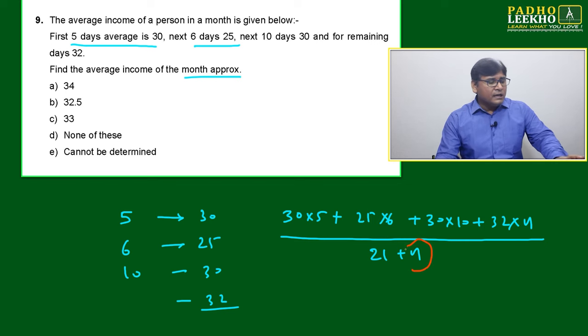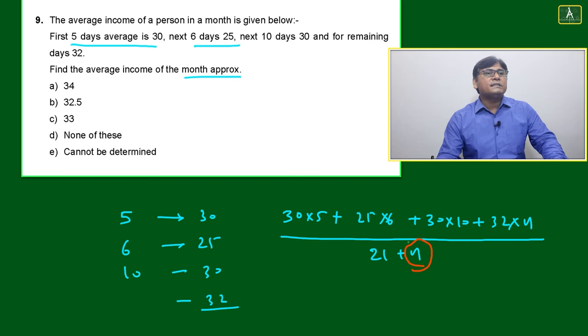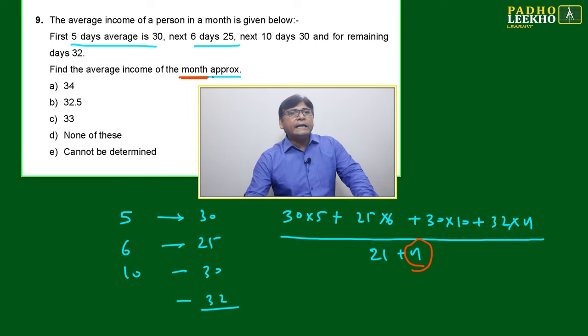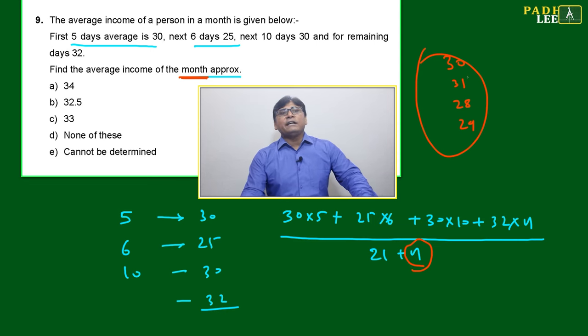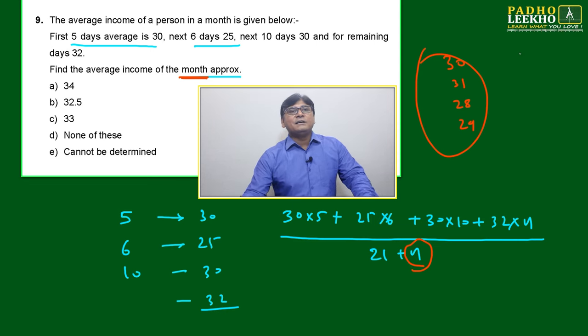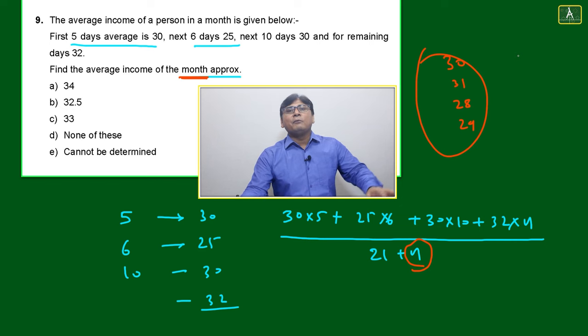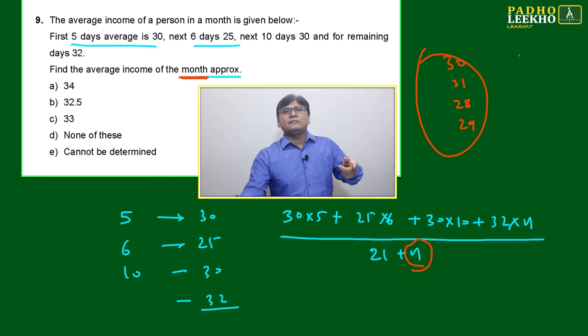Because it is written 'month,' and a month can be 30 days, 31 days, 28 days, or 29 days. If it is the month of February, it may be 28 or 29. If it is a month of June, September, or November, only four months will be 30 days.